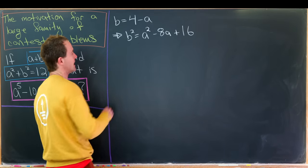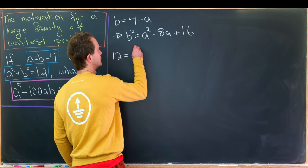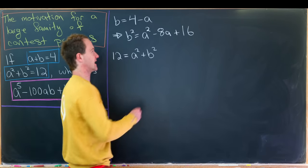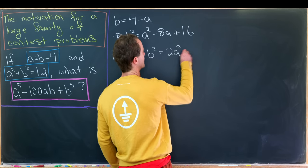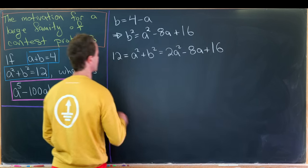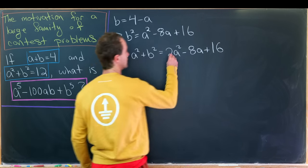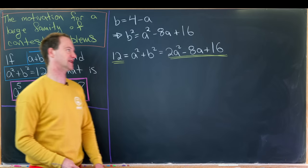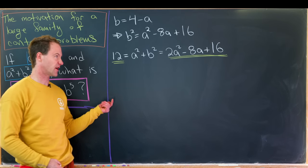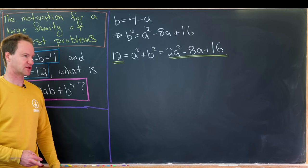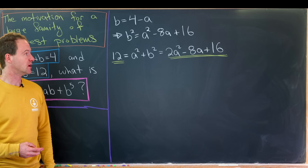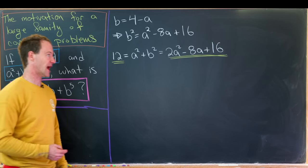We have 12 equals a squared plus b squared. If we add a squared to both sides we get 12 equals 2a squared minus 8a plus 16. That's maybe the first important equation. You might want to immediately solve for a, but that won't be the right strategy — it will work but it's more work than we'd like. What we'd like to do instead is solve for a squared.